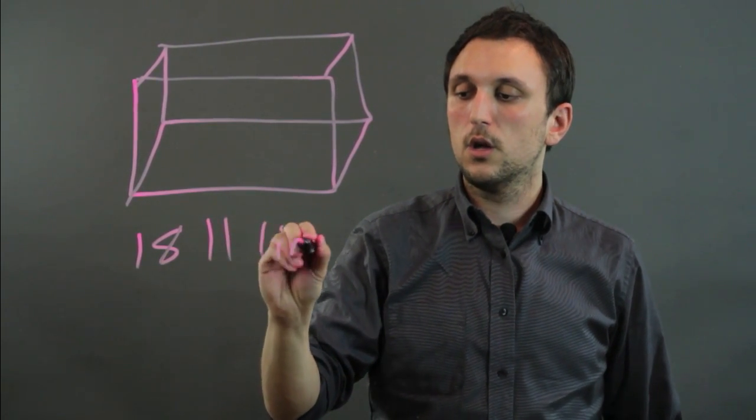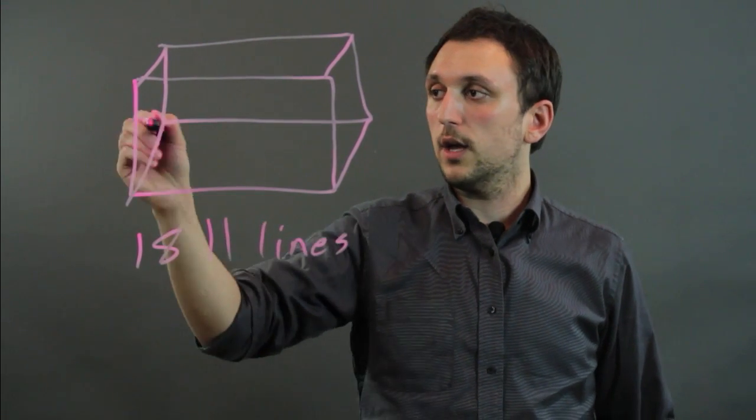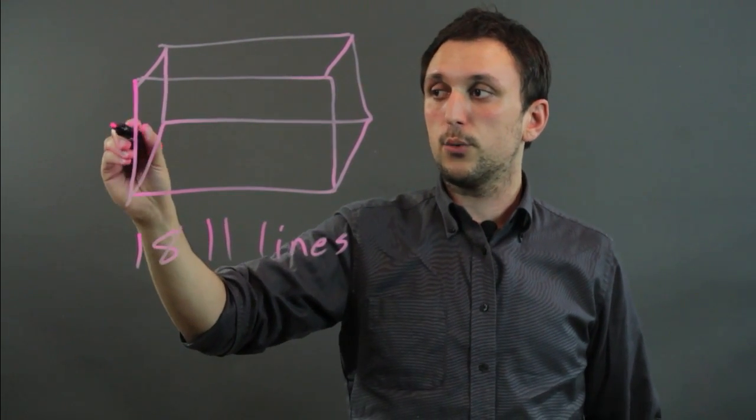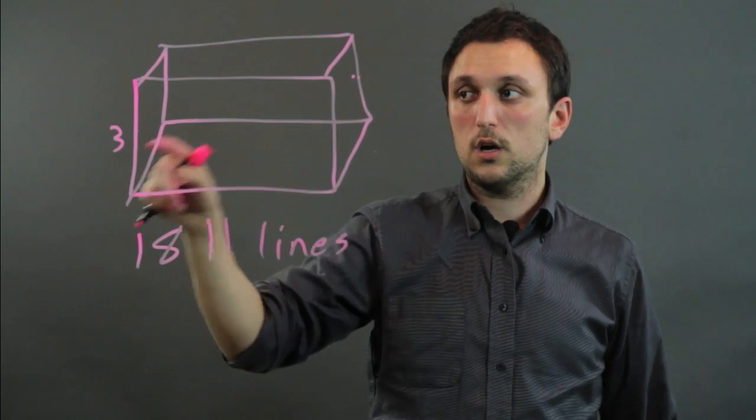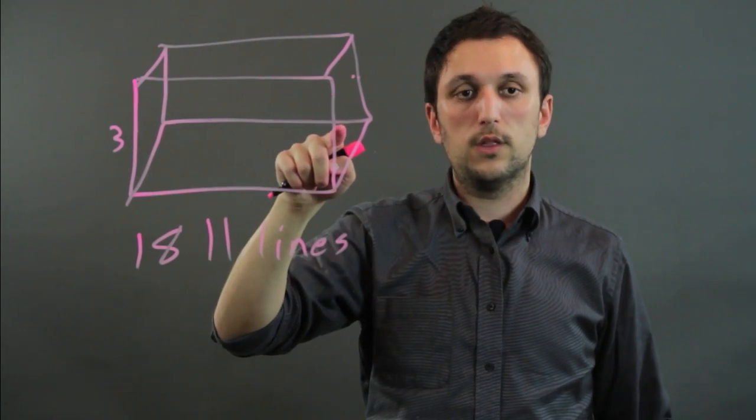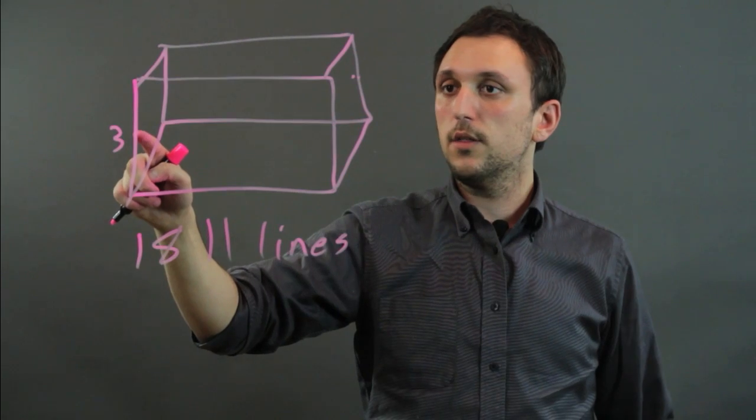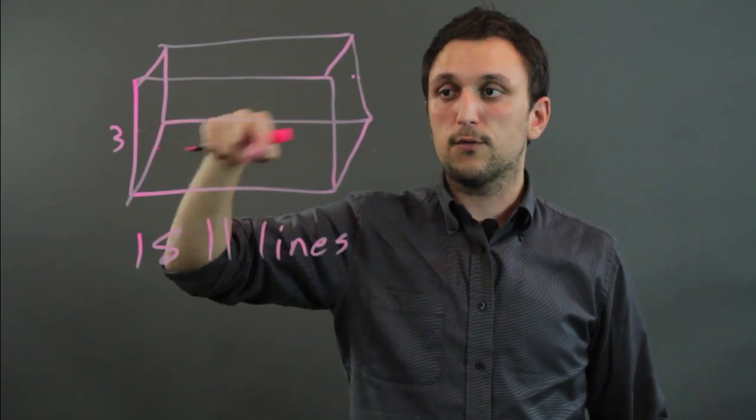So the way we figure that out is we say okay well from here there's three because we can say from here this is parallel to this line across, this is parallel to this line and this is parallel to this line in different planes.